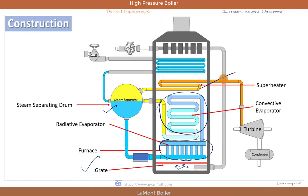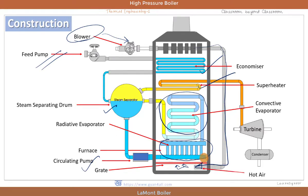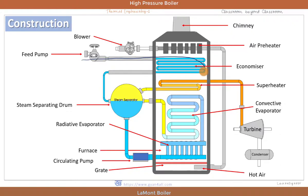This is the superheater. This is the economizer. The feed pump supplies water to the boiler through the economizer. This is the blower, which pumps air through the air preheater and the hot air enters into the furnace. This is the entry of hot air from the air preheater. This is the chimney air preheater. Water from the steam drum is circulated by the circulating pump and is first supplied to the radiant evaporator.